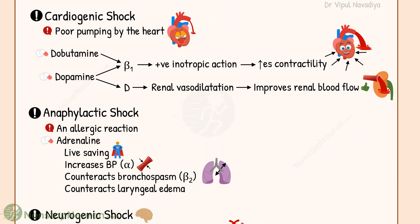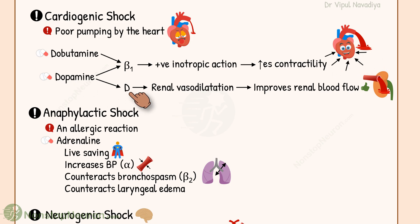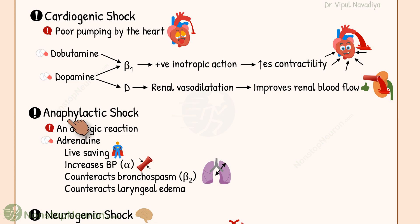Now let's talk about a few specific types of shocks. First, cardiogenic shock. Here the reason for poor tissue perfusion is poor pumping by the heart. Dobutamine and dopamine at low to moderate doses stimulate beta-1 receptors. The resultant positive inotropy helps the heart pump more blood. Dopamine has additional action on dopaminergic receptors as well, causing renal vasodilatation which improves renal blood flow.